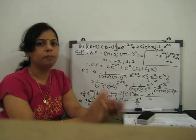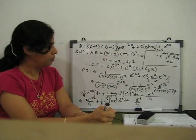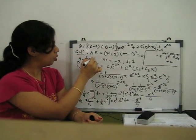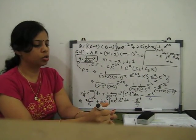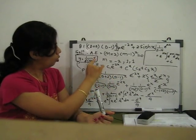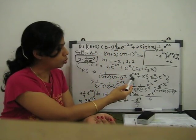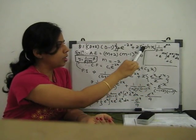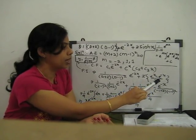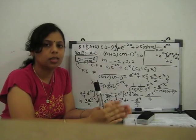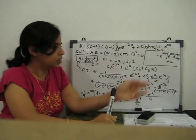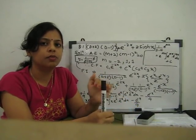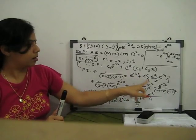Step 2: Find the particular integral PI. For PI, we write y = (1/f(D)) · X. So PI = (1/f(D)) applied to our right-hand function. We replace sinh(x) with its exponential form: sinh(x) = (e^x − e^(−x))/2. Similarly, cosh(x) = (e^x + e^(−x))/2. Whenever hyperbolic functions appear, first replace them with exponentials, then solve. So our function splits into exponential parts.